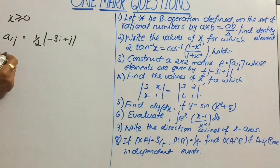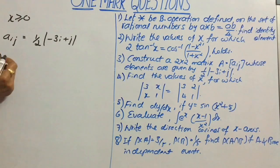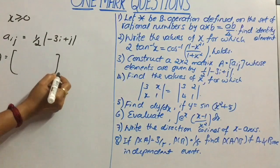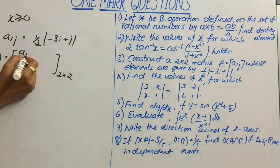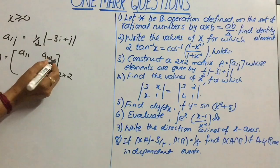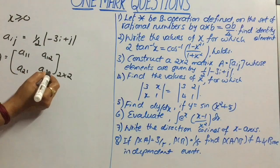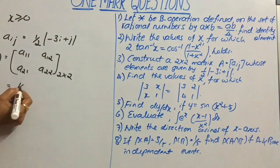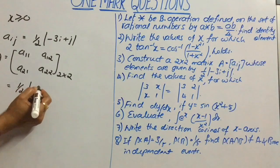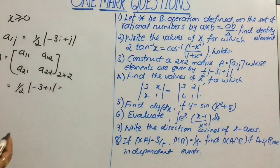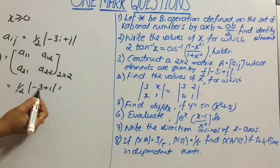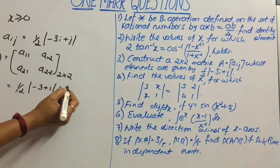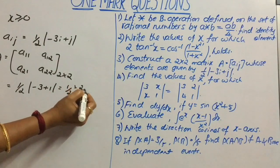We have to define the function and consider the matrix A of order 2×2. The first entry will be a11, then a12, a21, a22. For a11, value of i is 1 and j is 1, so half into modulus of minus 3 plus 1. Minus 3 plus 1 becomes minus 2; modulus of that becomes 2. So we get half into 2, that is 1.